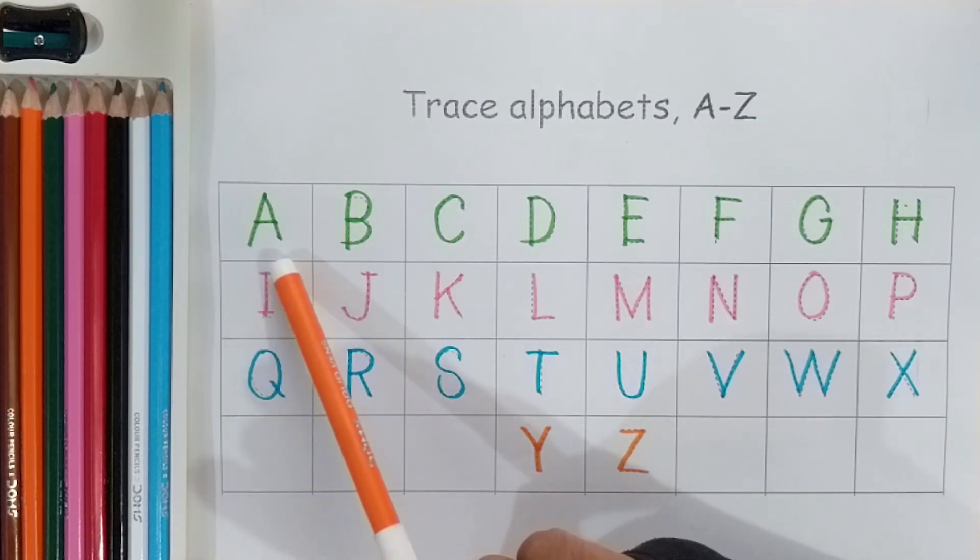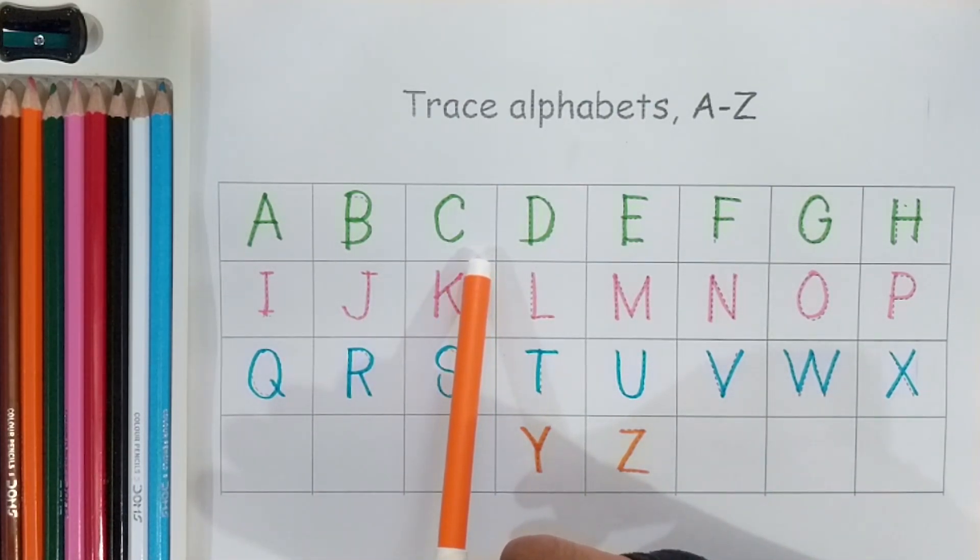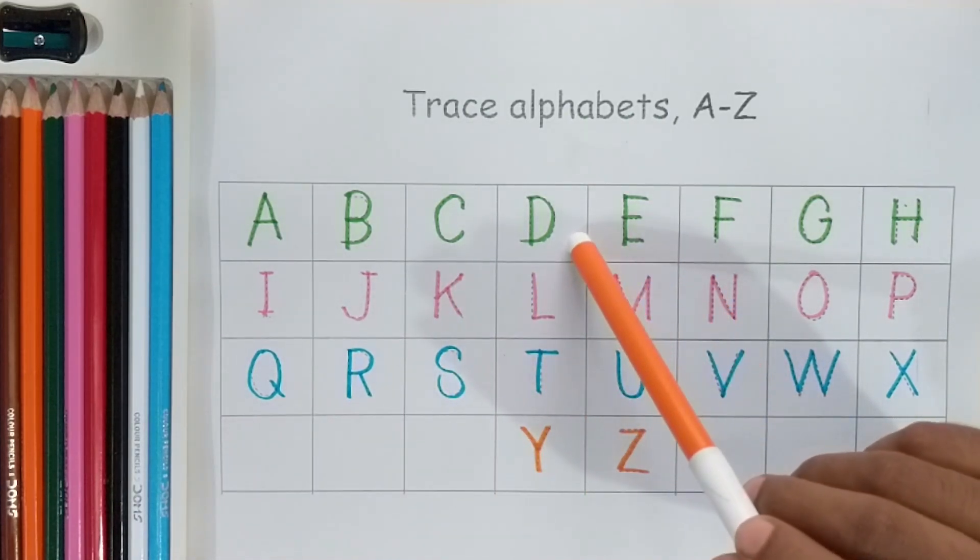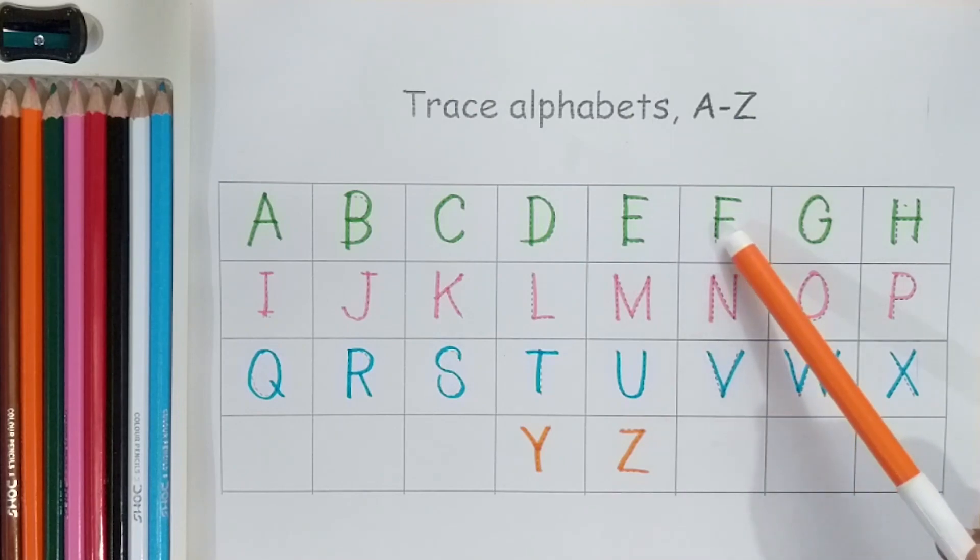Again. A. A is for apple. B is for ball. C is for cat. D is for dog. E is for elephant. F is for fish. G is for grapes. H is for house.